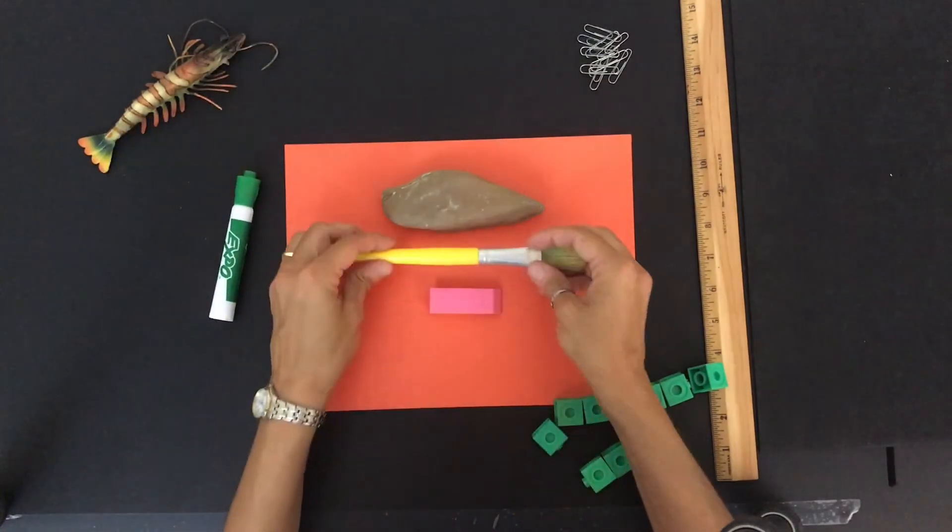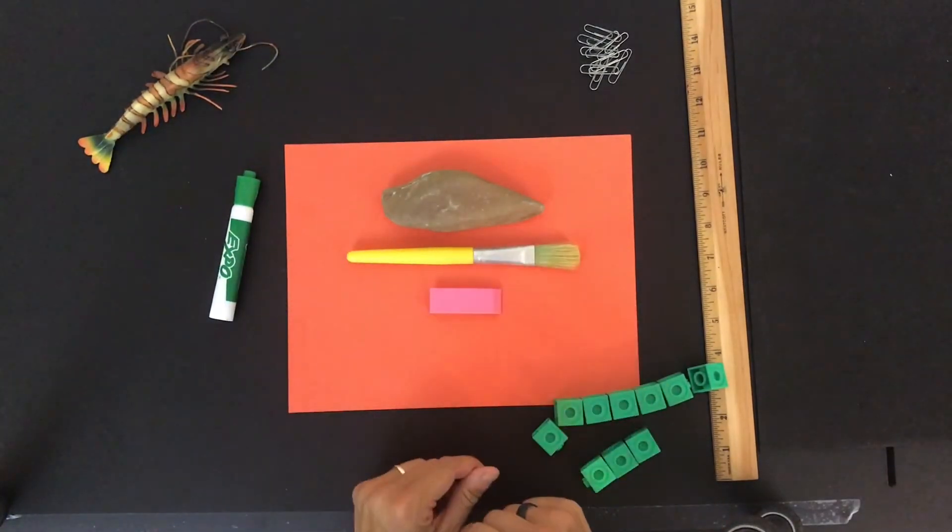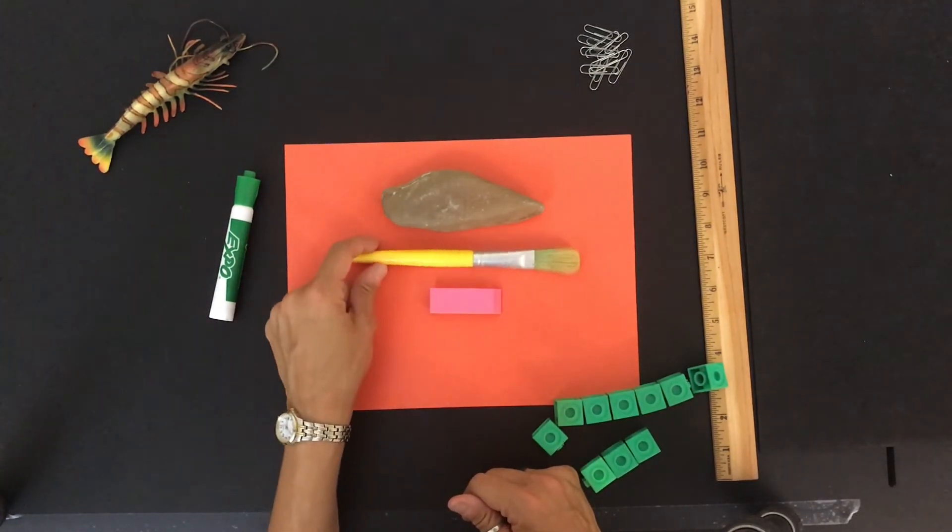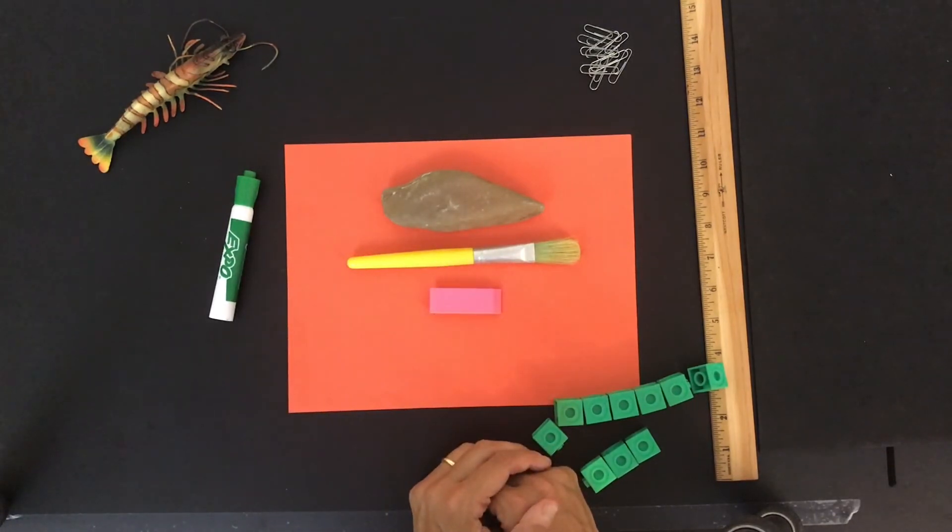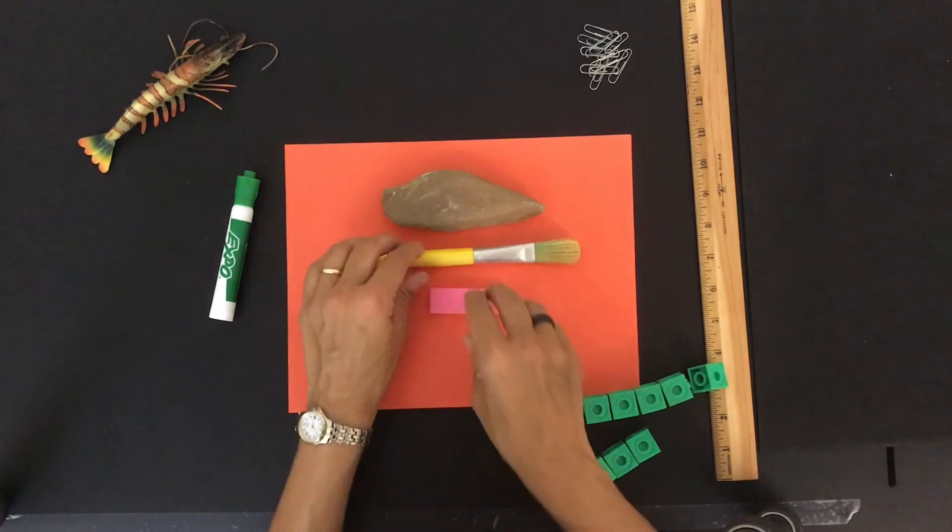So let's bring the eraser and the paintbrush back. Which one is the longest out of these three? That's right. The paintbrush is the longest. Which one is the shortest? The eraser is the shortest. Very good.